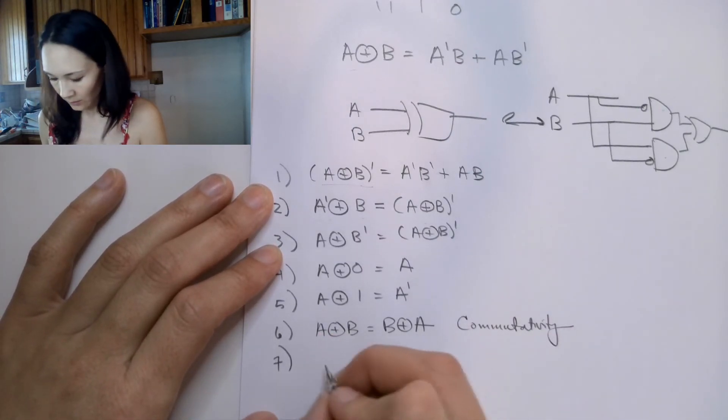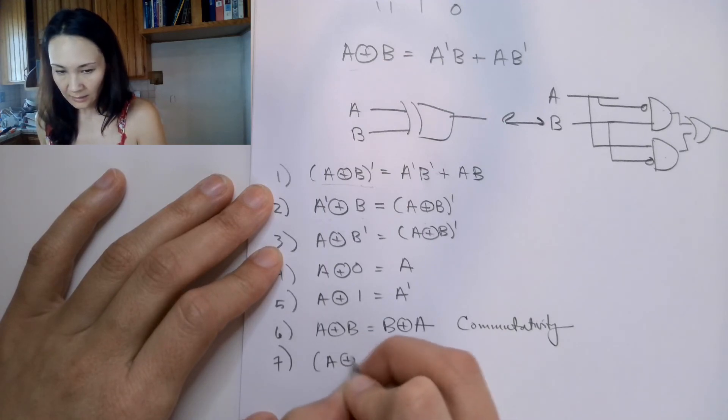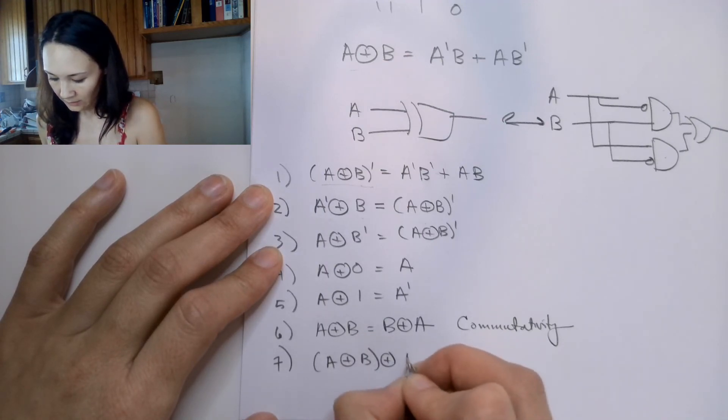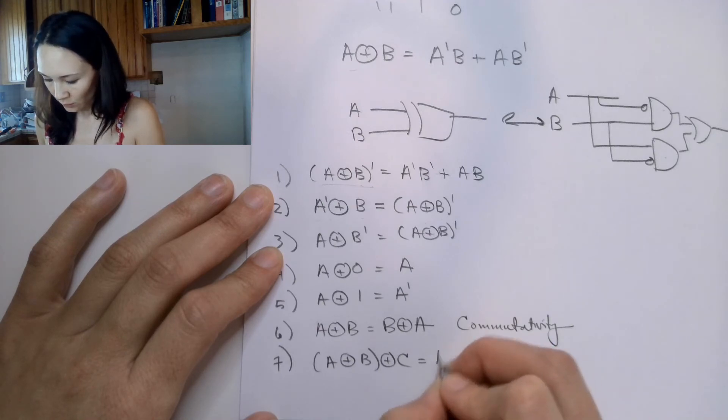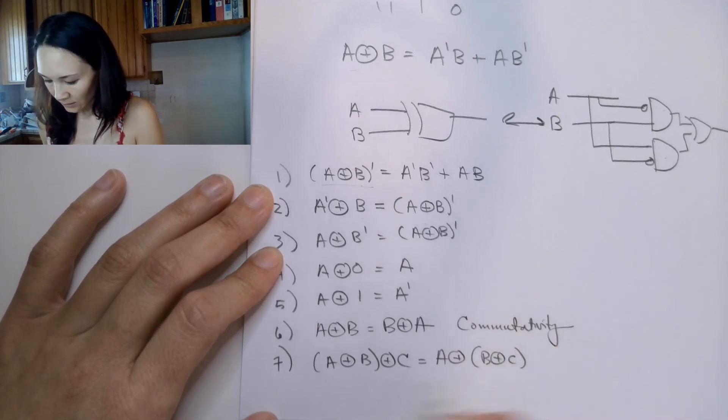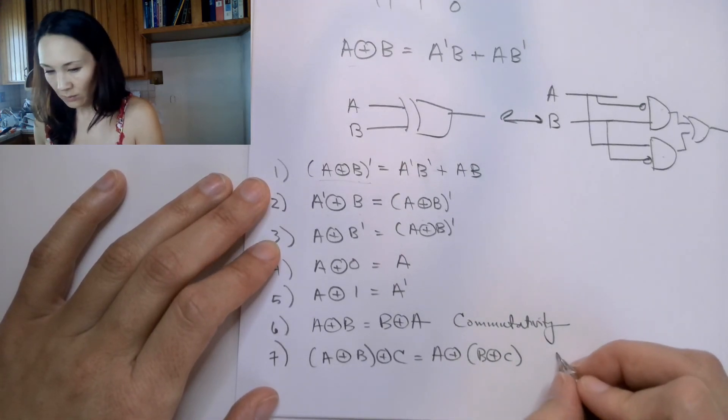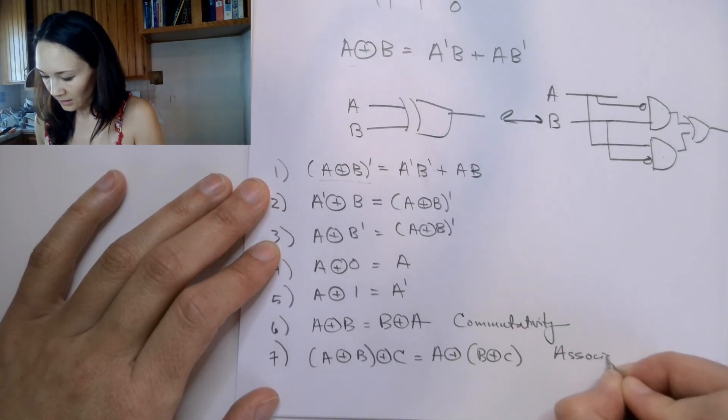And we also have that A XOR B XOR C is equal to A XOR B XOR C. So it doesn't matter what the grouping is. You might recognize this as associativity.